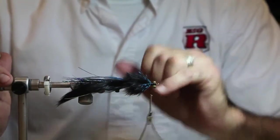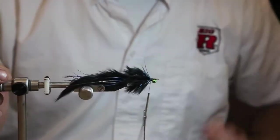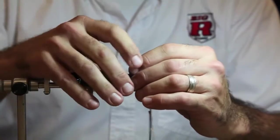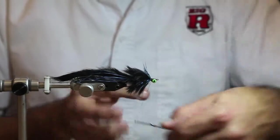Here you can add any type, any color bunny that you want. And what we're going to add here is I'm just going to do more black, but if you want to make like more of an egg sucking leech look, you can put on whatever pink, purple, red, orange. I'm going to use a dubbing loop here.